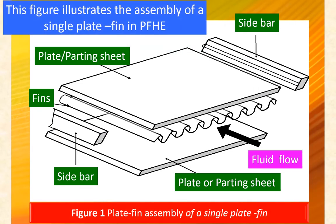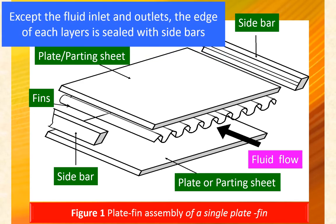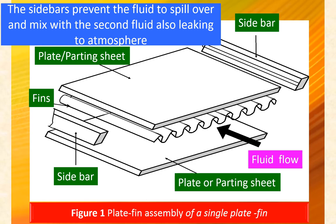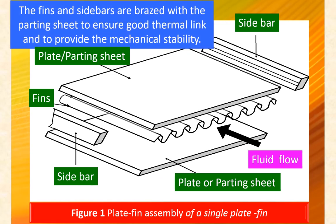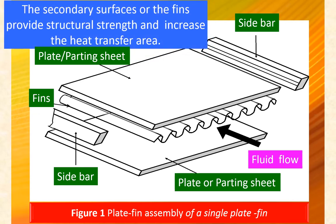This figure illustrates the assembly of a single flat fin layer in a plate fin heat exchanger. Process streams flow along the passages created by the fins between the parting sheets. Except at the fluid inlet and outlet, the edge of each layer is sealed with side bars, which prevent fluid from spilling over and mixing with the secondary fluid or atmosphere. The fins and side bars are brazed to the parting sheets to ensure good thermal contact and mechanical stability.